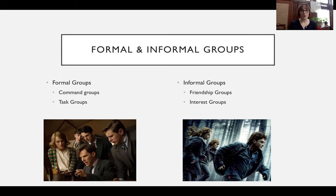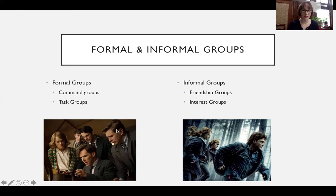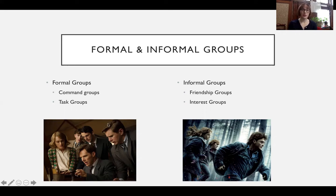In the film The Imitation Game, you can see a task group — a group of people brought together to pursue a specific task. They were brought together to solve the German code-generating machines in World War II, namely the Enigma machines. Alan Turing and his colleagues were brought together for the purpose of breaking the code. And when they did, their work ended and the group disbanded. They were no longer a group because their task had been accomplished. So that's the difference between a task and a command group: they're both formal, but a task group is not as permanent as a command group.